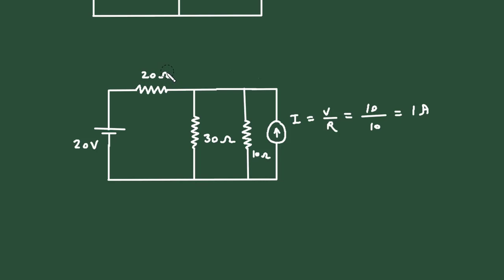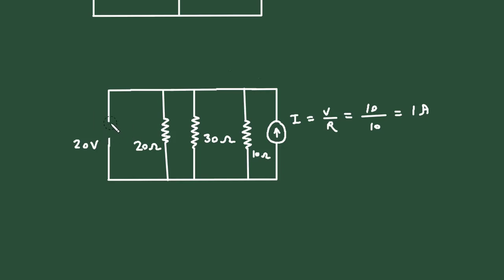Similarly, the 20 ohm will be in parallel. This voltage source will be converted into a current source, and the direction of the current source will be upward because here it is positive and here it is negative. Current I is equal to V by R. The value of voltage is 20 and the value of resistance is 20, so it will be 20 divided by 20, which is 1 ampere. Now we can erase this 20 volt.